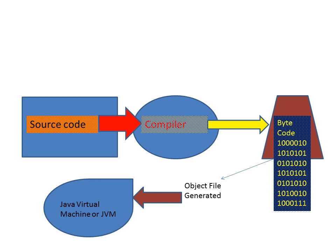The bytecode is also known as the object file. This generated object file is sent to the Java Virtual Machine. The Java Virtual Machine will translate and execute it. The Java Virtual Machine is actually an interpreter which will interpret this bytecode and generate the execution. When it is executed, you will find that the Java bytecode has been executed. So the executor of the Java bytecode is the Java Virtual Machine.